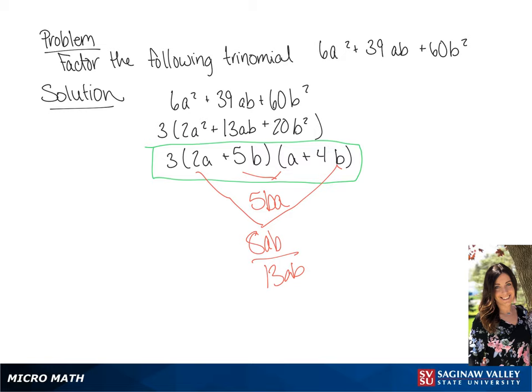So the solution to this problem is 3 times (2a plus 5b) times (a plus 4b).